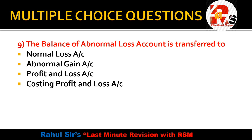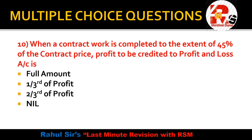Question number 9: The balance of the abnormal loss account is transferred to — normal loss, abnormal gain, profit and loss, or costing P&L? We write abnormal loss on the credit side of the process account at cost per unit. When we make the abnormal loss ledger, the remaining balance is transferred to the costing profit and loss account.